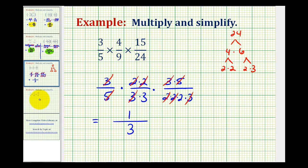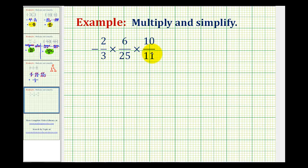Let's take a look at a second example. The first thing we should notice on this example is that we have a negative times a positive times a positive, so this product will be negative. But we'll approach this the same way. We're going to write each of the numerators and denominators in prime factored form.